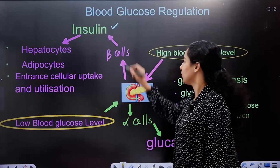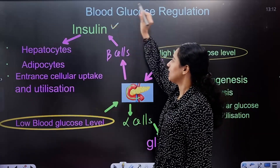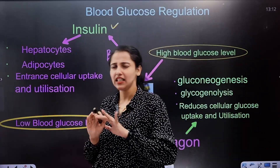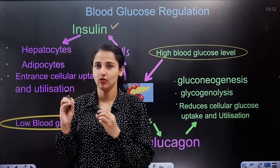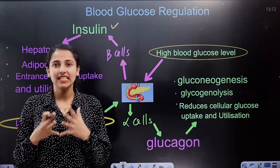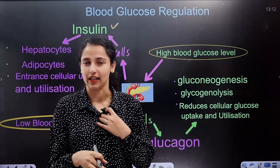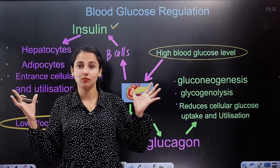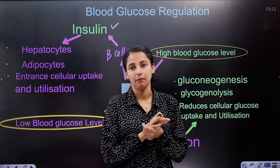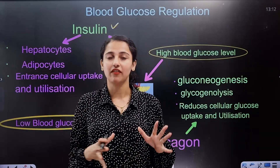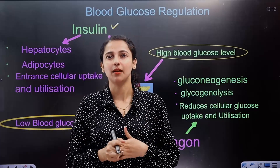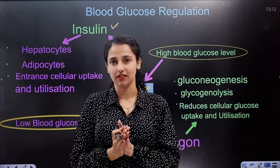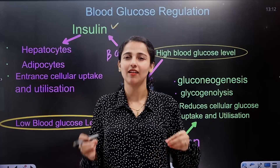If blood glucose is high, the beta cells in the pancreas — in the Islets of Langerhans — are activated. The beta cells secrete a hormone called insulin. Insulin functions to bring blood glucose levels back down.